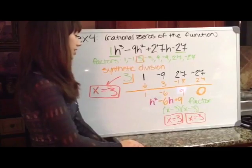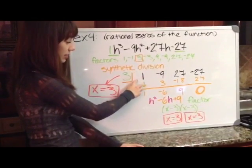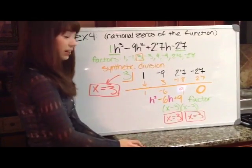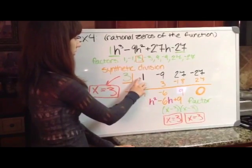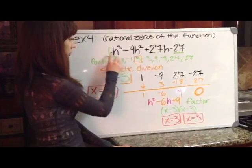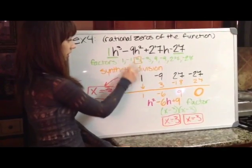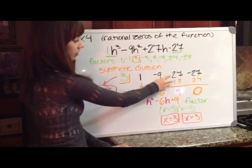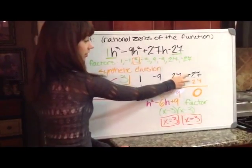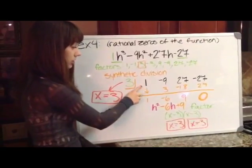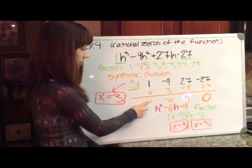So I chose 3 for my synthetic division. So my 3 goes in this nice little box right here. Next, I use these numbers right here which I get from the equation. So the 1 goes right here, negative 9, negative 9, 27, 27, negative 27, negative 27.